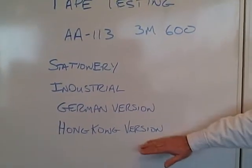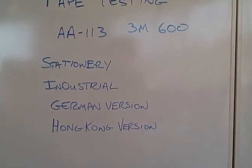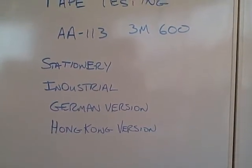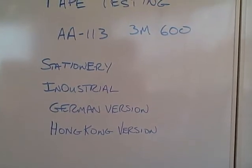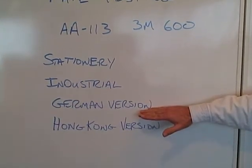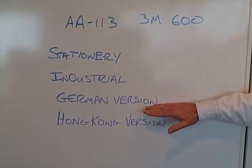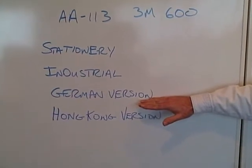For example, the stationary version and the Hong Kong version have the same adhesion level, but it's much too low to achieve the required effect of the test method. The German version, the Germans make very sticky tape. It's actually too high. The industrial one is Goldilocks. It's just right.